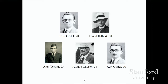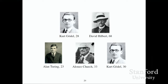Gödel was 28 when he undid the work of Hilbert, who was at the time 68. Turing was 23 when he resolved the impasse between Church, who was 33, and Gödel, who was by then an ancient 30. So all you young people in the audience — you know what to do. It's your job to keep explaining to your elders when we've got it wrong.